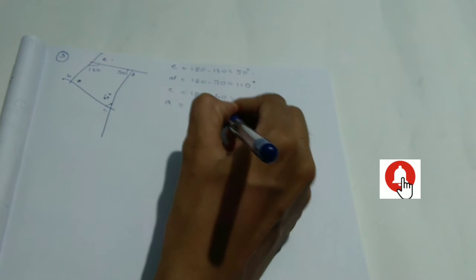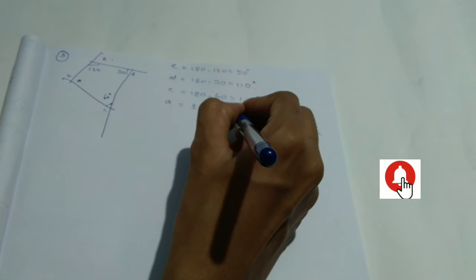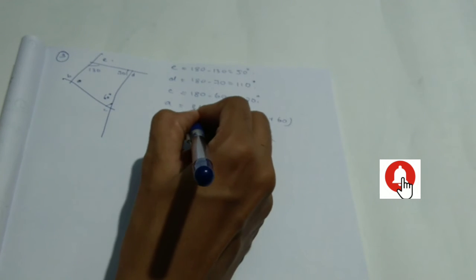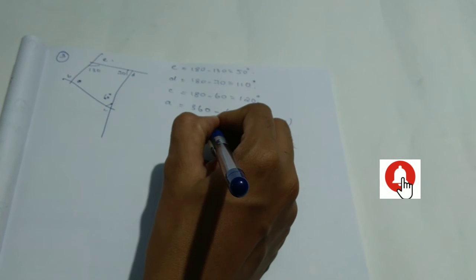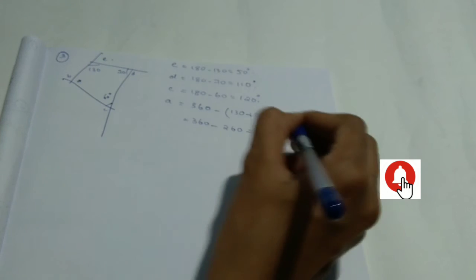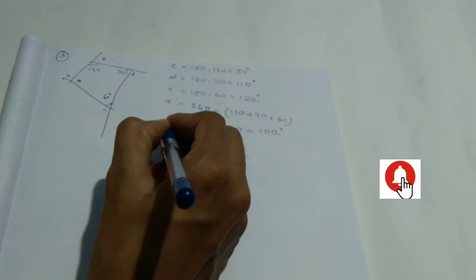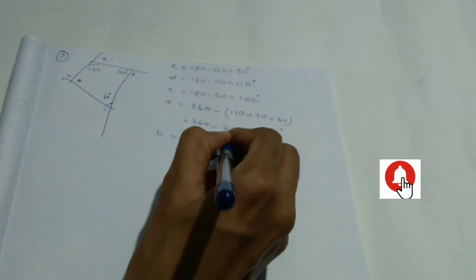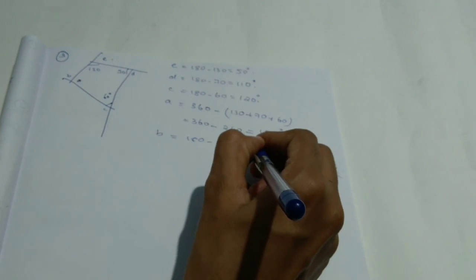So 120 minus 130 plus 70 plus 60. That's why 360 minus 260. That's why 100. We add A: 118 minus 3, 118 minus 3.